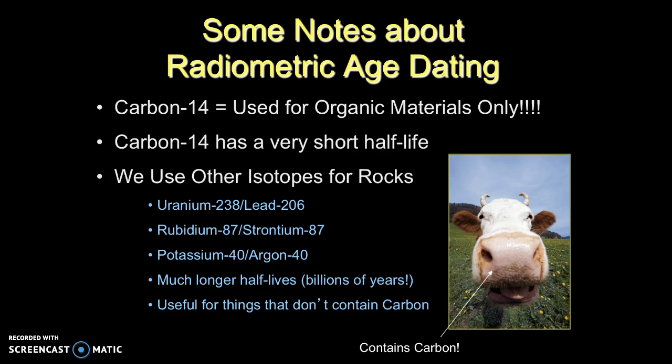Now some notes to keep in mind about radiometric age-dating. Carbon-14 is used for organic materials only. It does have a very short half-life. When we're looking at rocks, we're going to use other isotopes to age-date our rocks, like uranium-238 to lead-206 or rubidium-87 to strontium-87. These have much longer half-lives and they're useful for things that don't contain carbon.